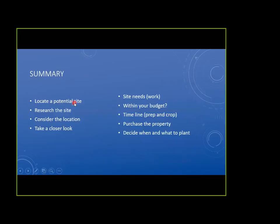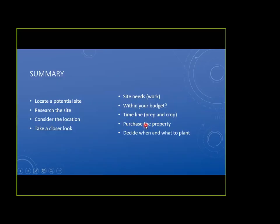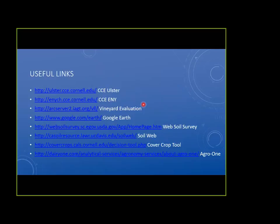To sum it all up: first locate a potential site and do research — is it in a good area, will it work for your customers? Take a closer look, figure out what needs to be done, and determine if it's going to be practical and within your budget and timeline. Every site will need work. If you've done all your research, everything checks out, then sign on the dotted line, purchase your property, and decide when and what to plant. The webinar will be saved so you can go back and access the links to Cooperative Extension Ulster, Eastern New York, the vineyard site evaluation tool, and other resources.